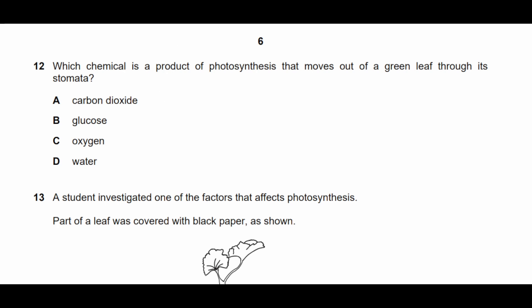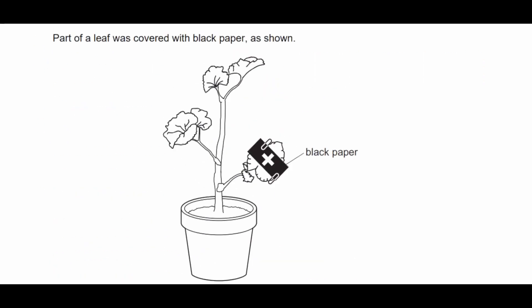Question twelve: which chemical is a product of photosynthesis that moves out of a green leaf through its stomata? A gaseous product of photosynthesis is oxygen, and oxygen moves out through the stomata during photosynthesis.